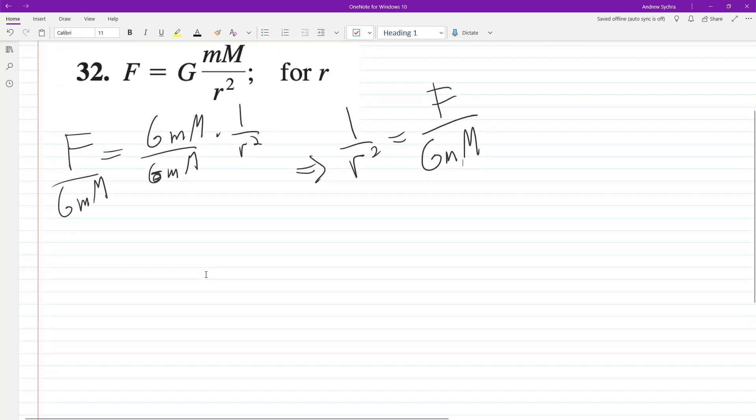Reciprocate these, so we end up with r squared is equal to big G, little m, big M over F, and take the square root of both sides.